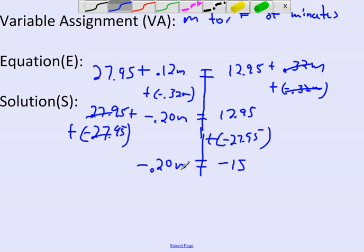Now, the next thing I have to do is get M by itself. And I'm going to divide it by negative .20. Bring down my M, because these cancel each other out. It's equal to negative 15 divided by negative .20. And that equals 75. And all good math students put a label on it. So it's 75 minutes.